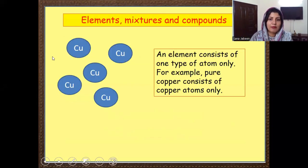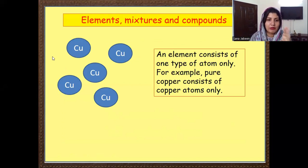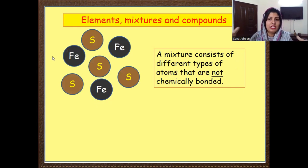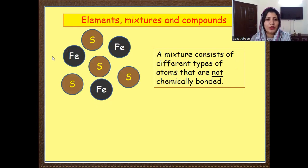The next thing is about elements. An element consists of the same type of atom, like copper atoms — they are present in the pure form, we call them an element. When we talk about a mixture, it means when more than one type of element combines with each other, like sulfur and iron — they combine and make a mixture.